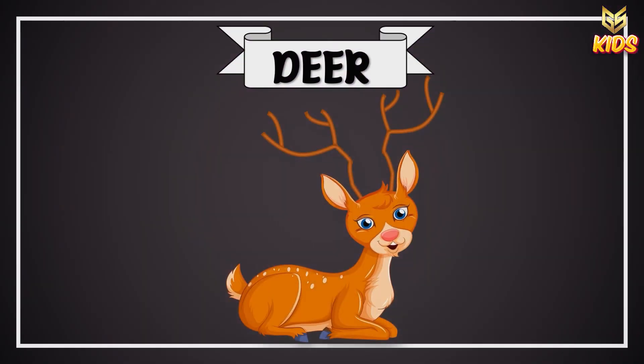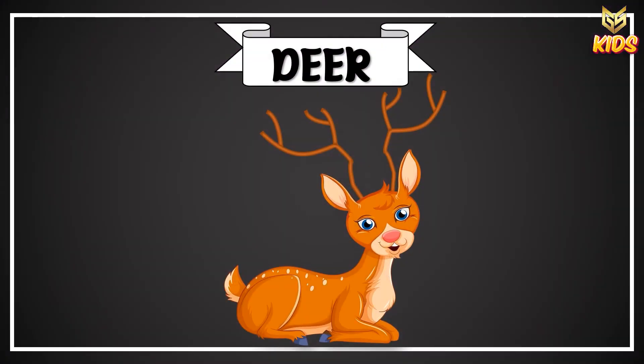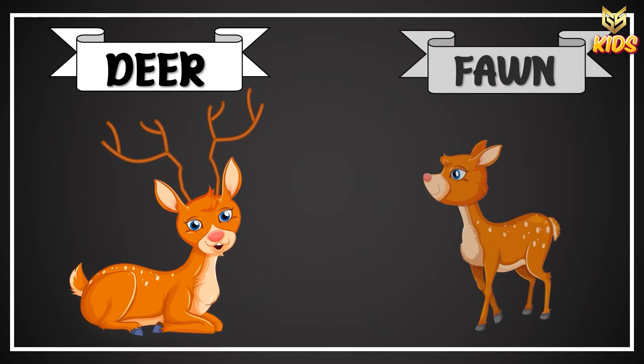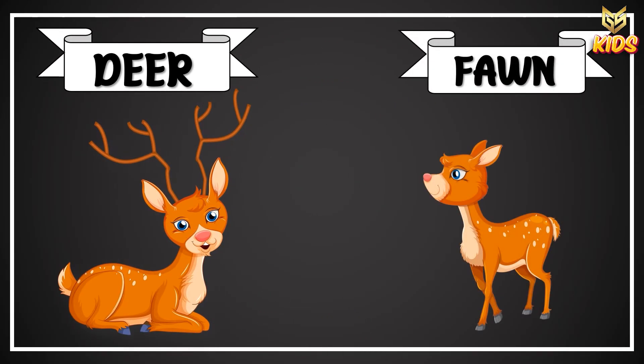Now what is this, children? This is a deer. What is this? Deer — and the baby deer is called a fawn. Yes, deer, fawn.